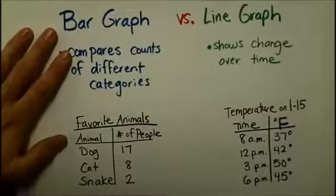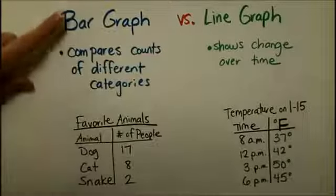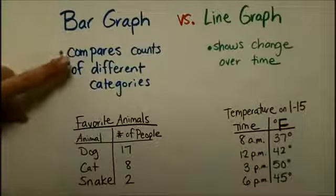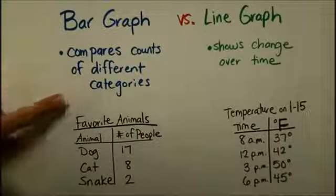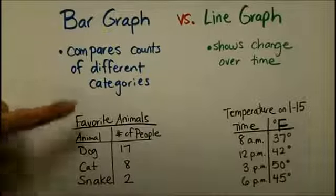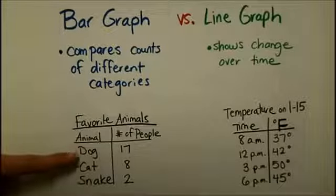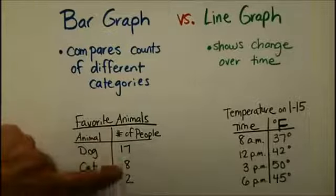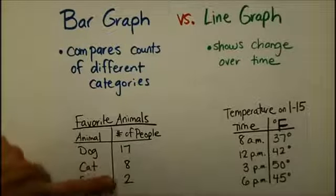First of all, let's talk about the difference between a bar graph and the other kind of graph we're going to use in fourth grade, which is a line graph. A bar graph compares counts of different categories. For example, if you asked people in our class what their favorite animals were, we could have different categories of dog, cat, and snake, and we could count the number of people that voted for each animal.